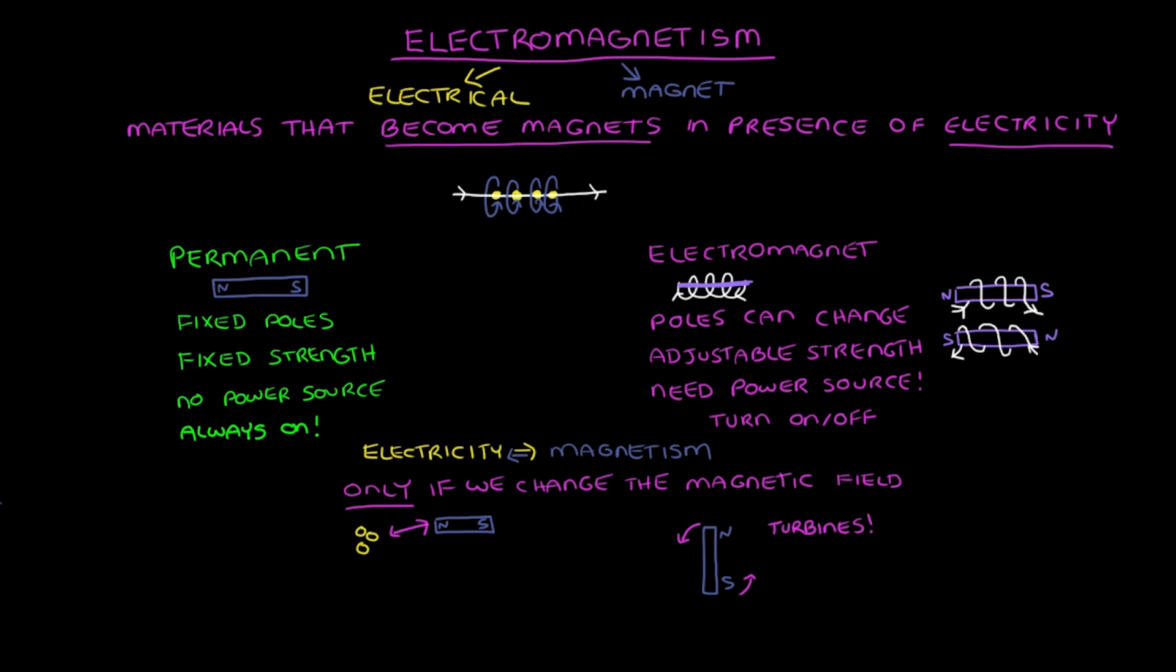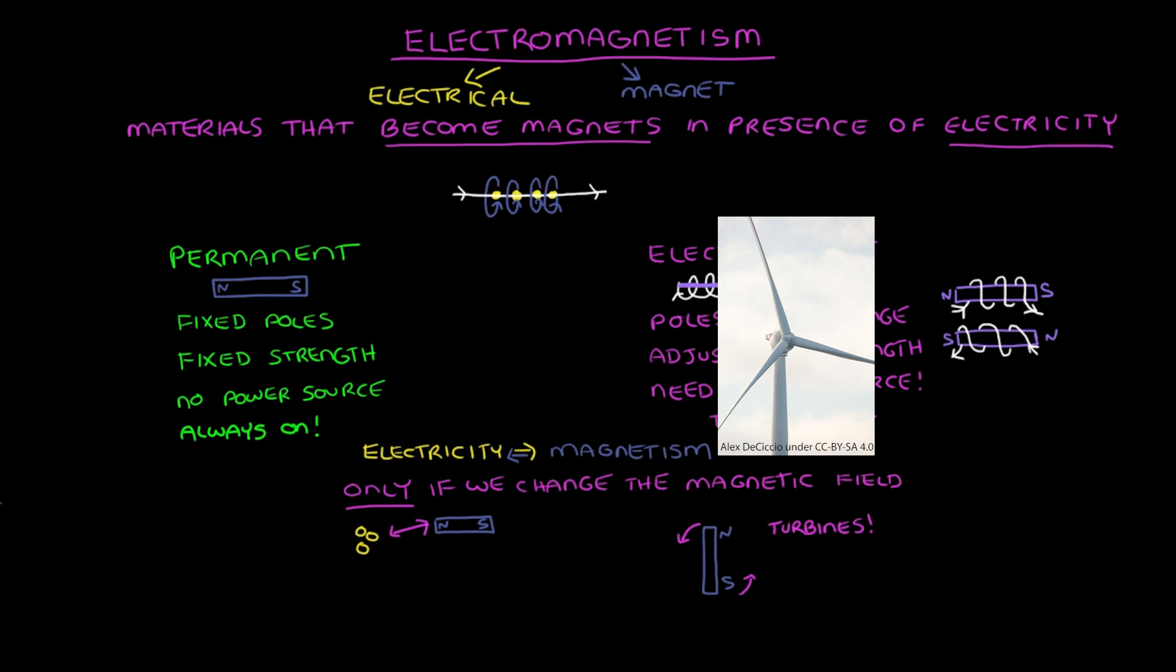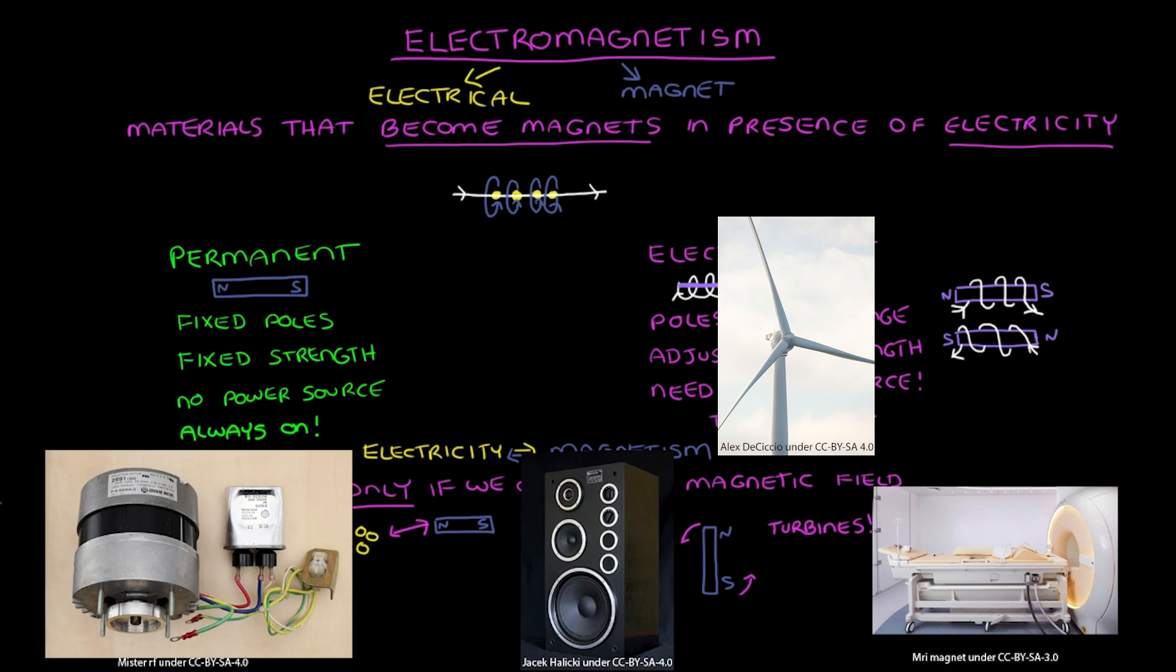And since electromagnets need a power source, this turbine is powered by wind. So you can see why electromagnetism is an incredibly important force, and this isn't the only important application of it. We use electromagnets in all sorts of other applications from motors to speakers and even medical scanners.